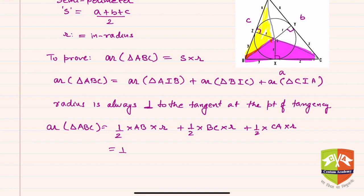Let's take half r common: half into AB plus BC plus CA into r. This is nothing but s into r, because s was nothing but AB plus BC plus CA upon 2.